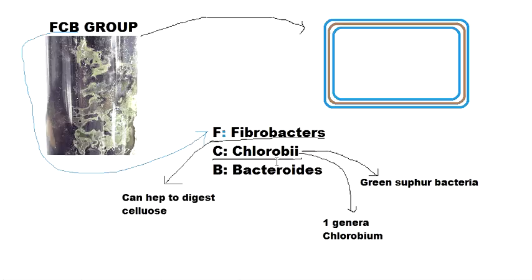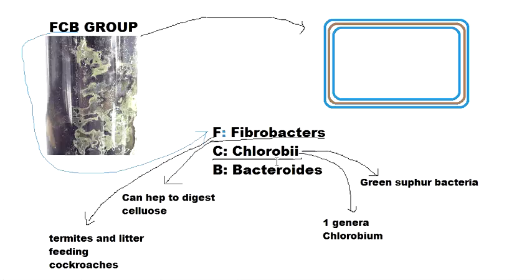Now let us look at Fibrobacter. The name tells us a lot: 'fibro' means fibers, and 'bacter' means bacteria. This type of bacteria can digest cellulose fibers. It is not widely found in the open environment but is mostly found in the guts of ruminants, termites, and litter-feeding cockroaches, where it helps digest the substances those organisms eat.